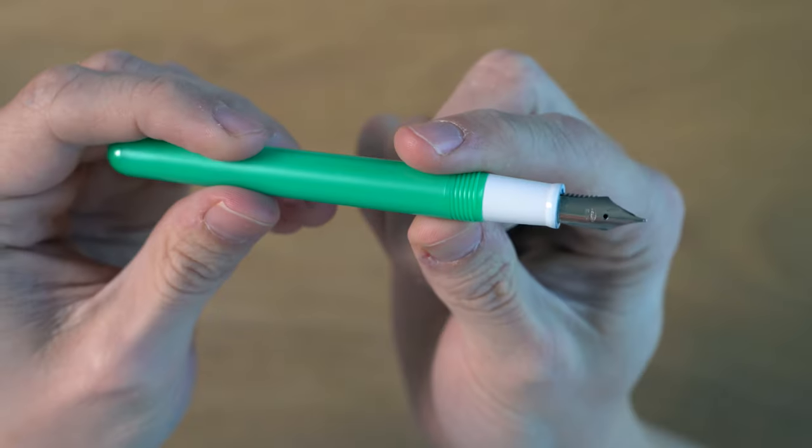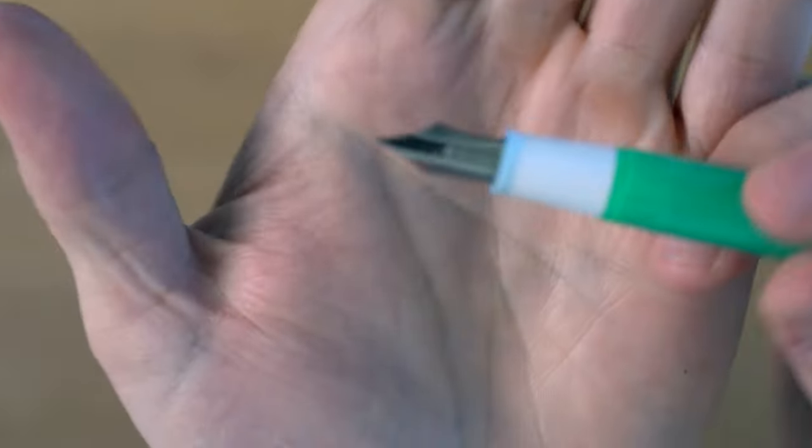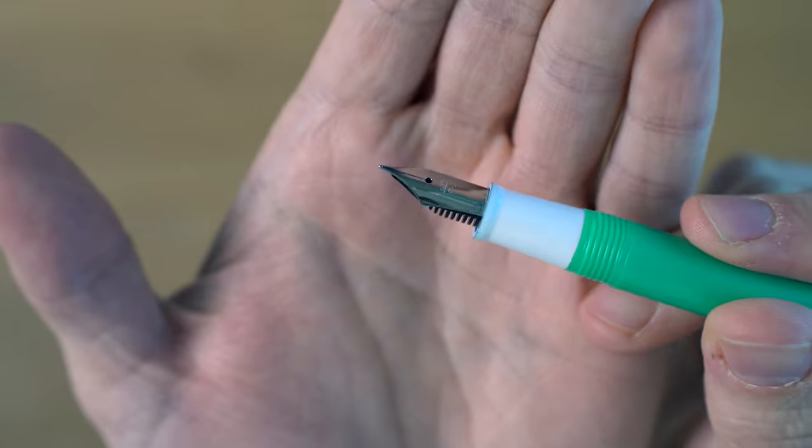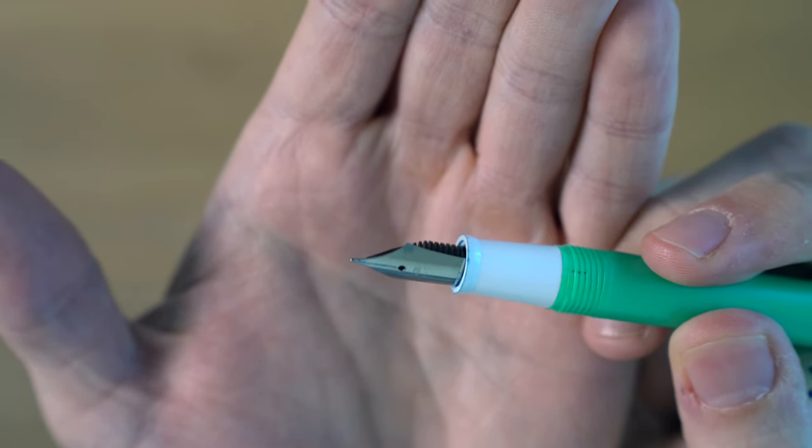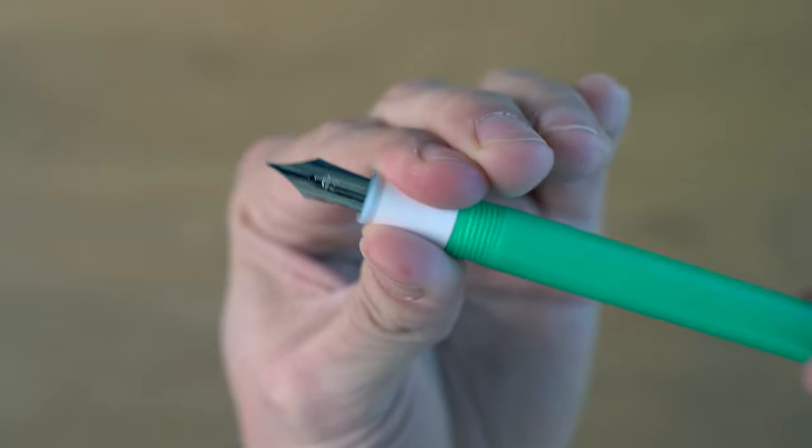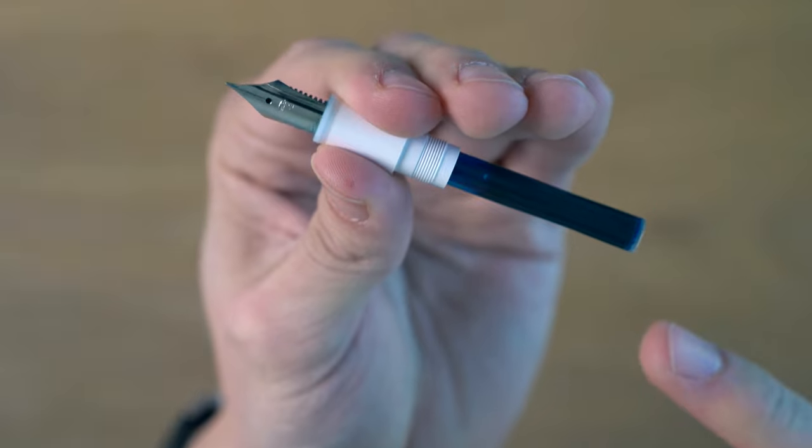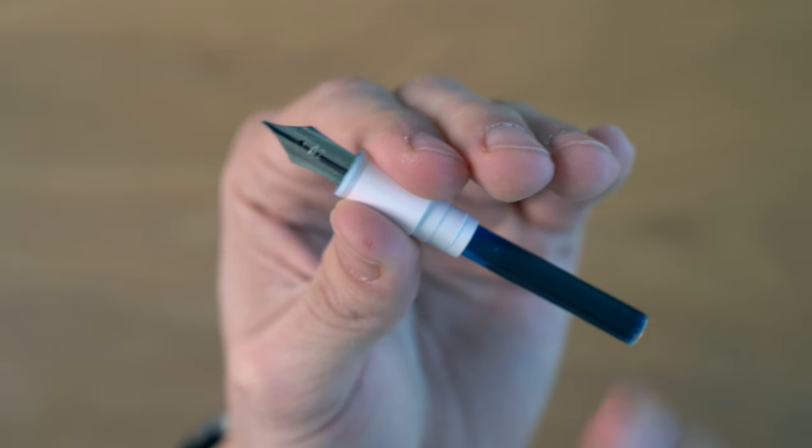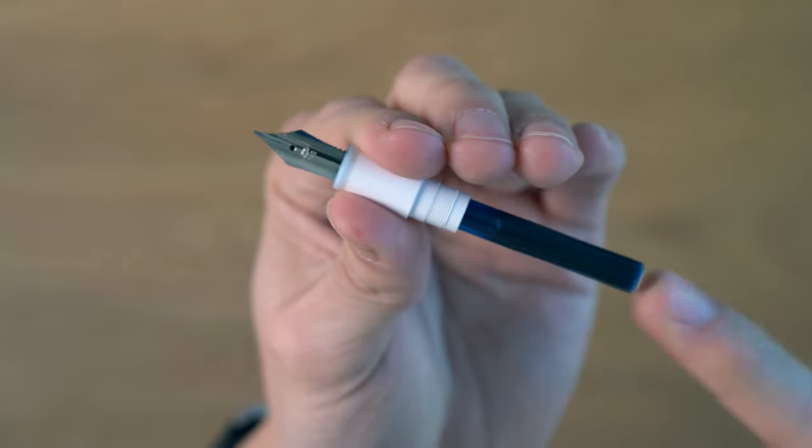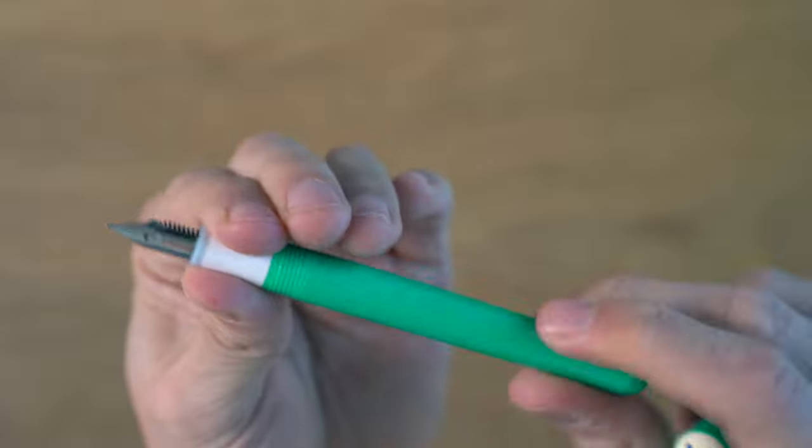We have a white grip section and then we have a Sailor F2 nib. Now these nibs, at least what we got in the United States, they only came in this fine medium grade. It's really like a fine. We didn't get any other options, unfortunately, which is definitely a downside of this pen. You also did not get a converter, which is fine at this price. I think it came originally with two cartridges. And one thing that was interesting is you were able to buy these with different color cartridges depending on the body of the pen. Proprietary Sailor cartridge and converter. So if you wanted to use other types of ink, you'd probably want to buy a Sailor converter.